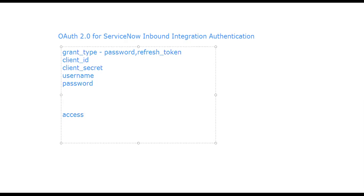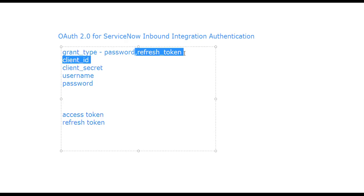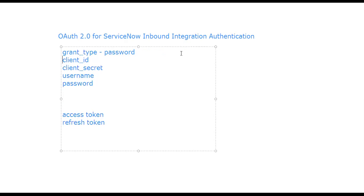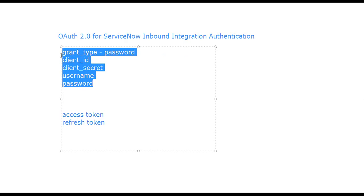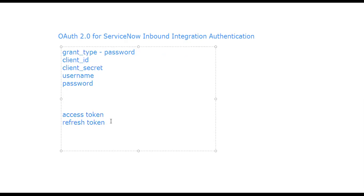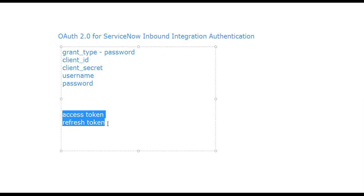Two things are important: the access token and the refresh token. When the client or third-party application makes a request for the access token using username and password, they will receive both the access token and the refresh token in the response.